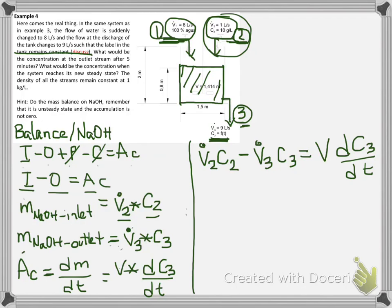If we substitute our input, outputs, and accumulation, we will have: input, which is volumetric flow 2 times concentration 2, minus output, which is volumetric flow 3 times concentration 3, equals accumulation, which is the volume of the tank times the derivative of concentration 3 with time. Now let's see what things are changing with time and what things are constants. Volumetric flow 2 and concentration 2 are constants — this stream is kept constant. Volumetric flow 3 is also constant at 9 liters per second, but concentration 3 is changing with time. The volume in the tank is constant, and C3 is changing with time.